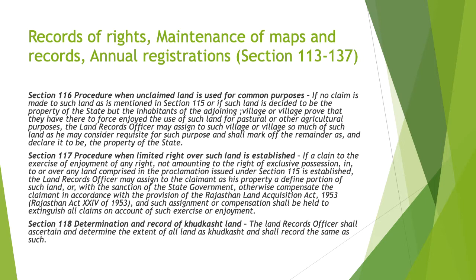Section 117: Procedure when limited right over such land is established. If a claim to the exercise or enjoyment of any right not amounting to right of exclusive possession in or over any land comprised in the proclamation issued under section 115 is established, then the land record officer may assign to the claimant a defined portion of such land or, with the sanction of the state government, otherwise compensate the claimant in accordance with the provisions of the Rajasthan Land Acquisition Act 1953. Such assignment or compensation shall be held to extinguish all claims on account of such exercise or enjoyment.